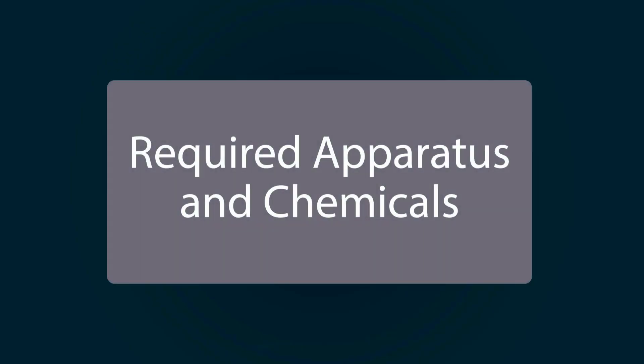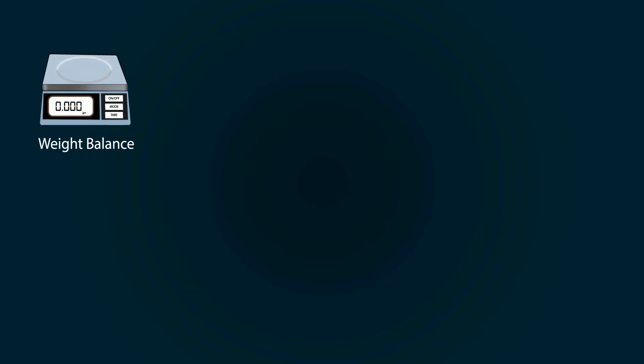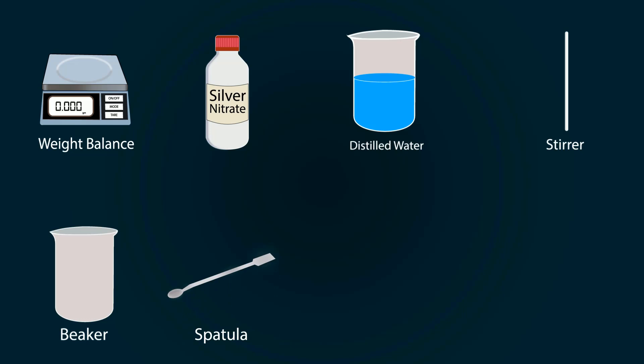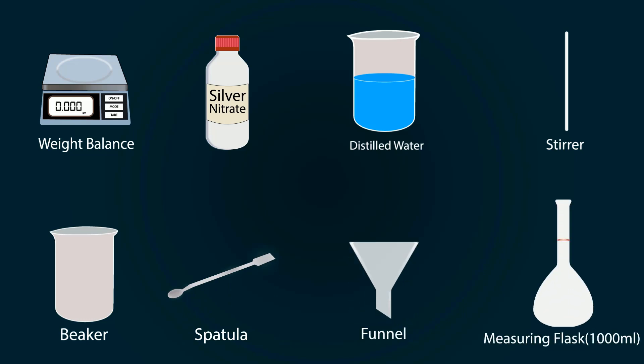Required apparatus and chemicals include a weight balance, silver nitrate in a bottle, distilled water in a beaker, a stirrer, one empty beaker, a spatula, one funnel, and a volumetric flask of 1000 milliliters.